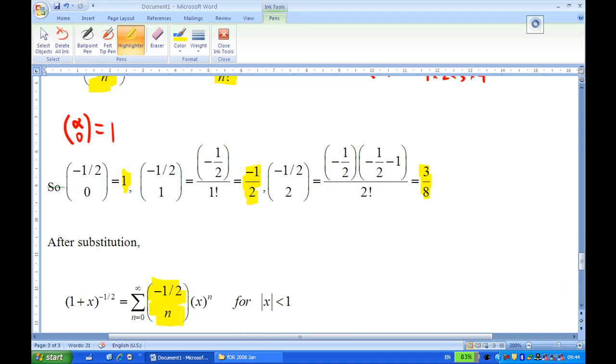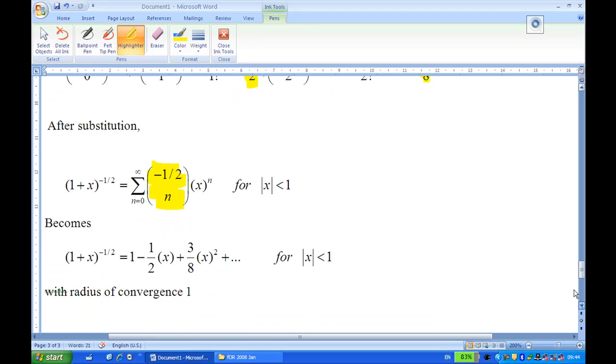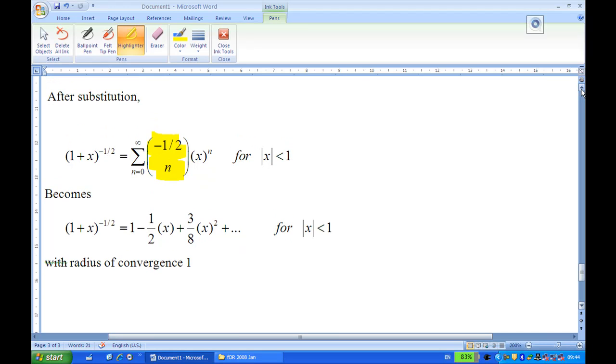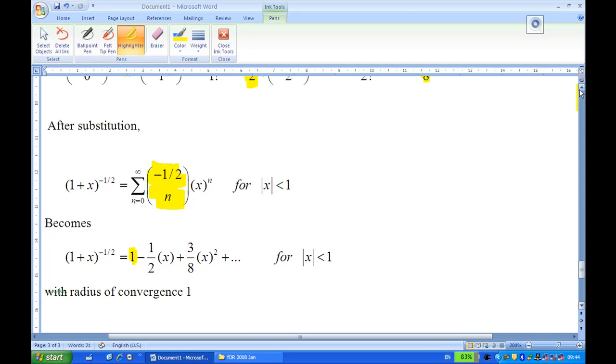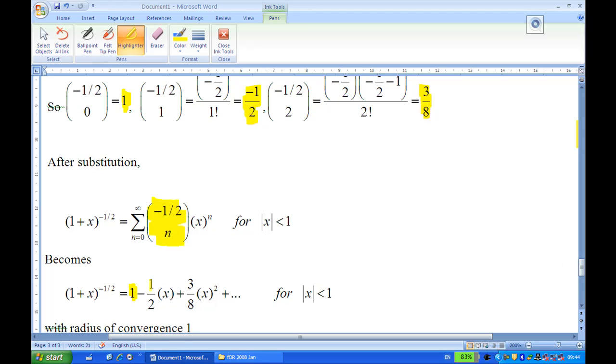So this thing here, together with n equals 0, 1 and 2, you'll find that the series becomes: first term is 1 from minus half choose 0 is 1, and then second term is minus half x, and then 3 over 8 x squared. This is how to find the Taylor series using the general binomial theorem.